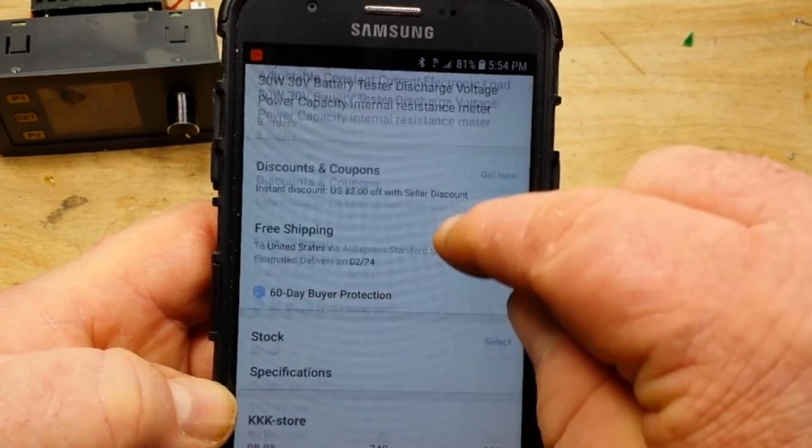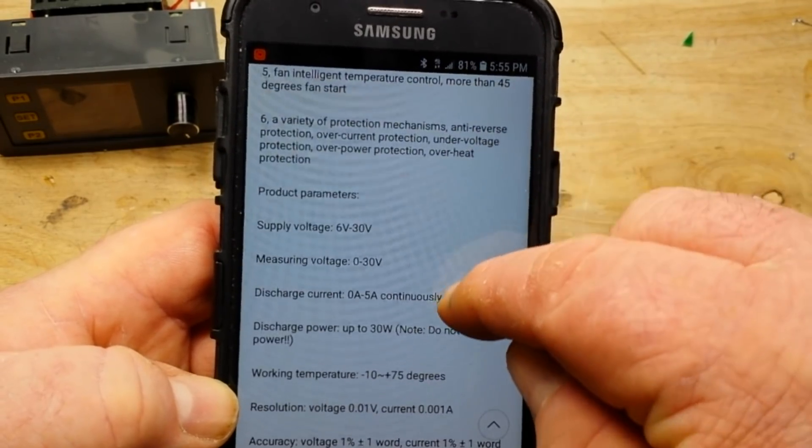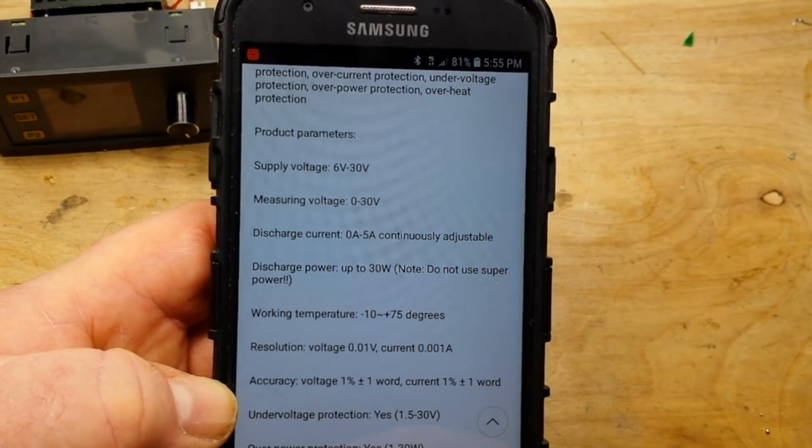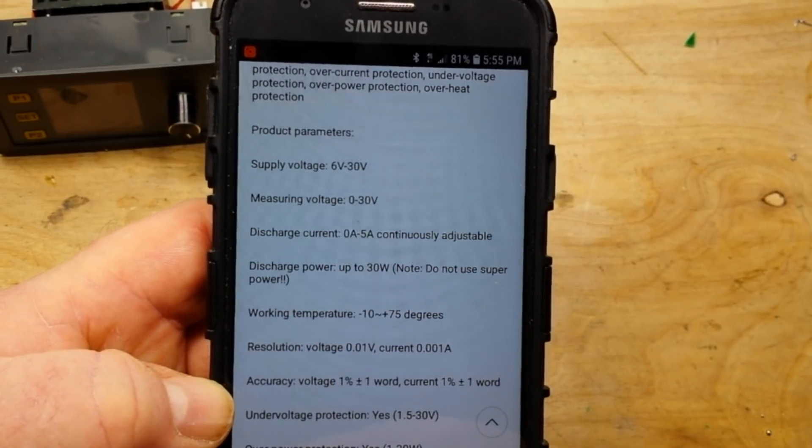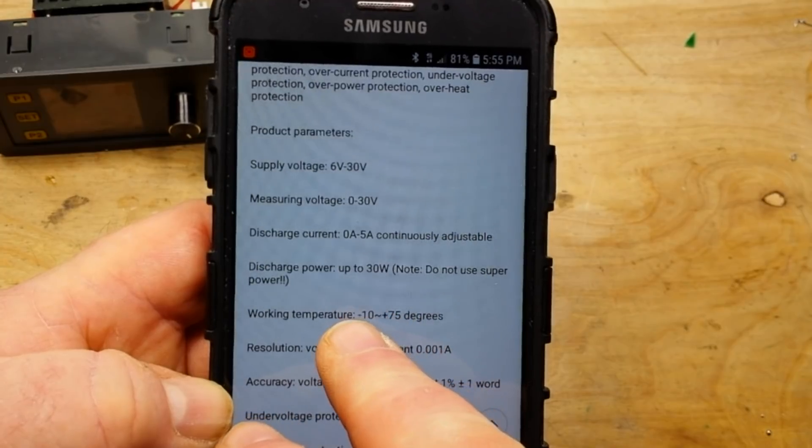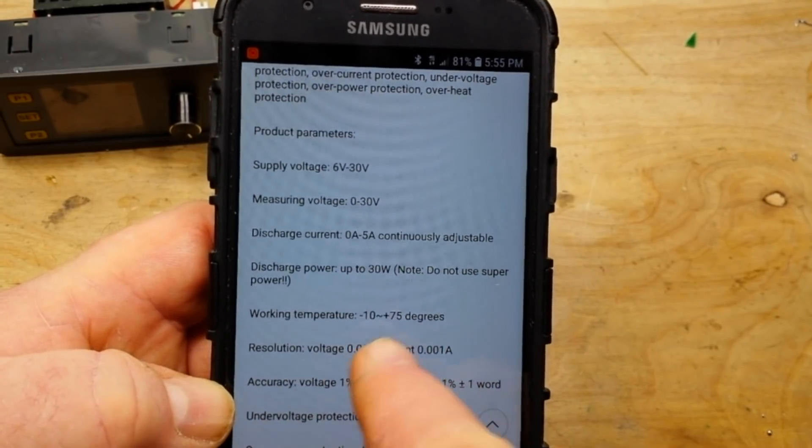We'll come down here and take a look at some of the specs. Supply voltage 6 to 30 volts, measuring voltage 0 to 30, discharge current 0 to 5 amps, discharge power up to 30 watts. Do not use superpower.